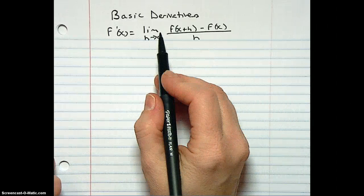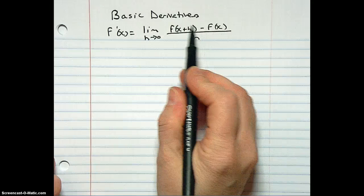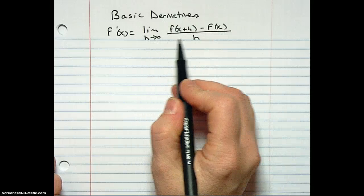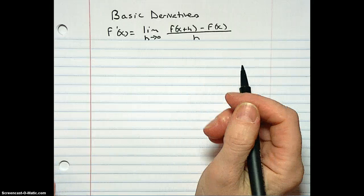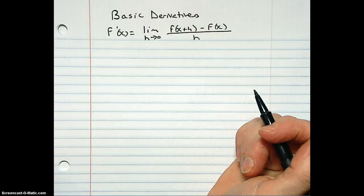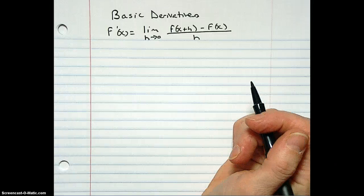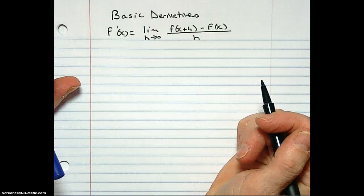By now you've done a whole bunch of derivative problems using this limit as h goes to zero of f of x plus h minus f of x over h, and there's all sorts of ugly algebra and lots of places to make mistakes. Have we had enough of those? Yes. Okay, so should we learn a shortcut? Yes.